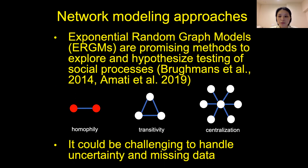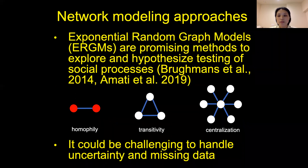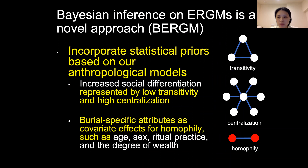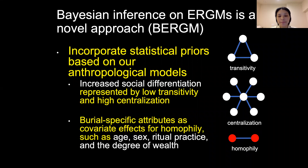ERGMs allow direct modeling for the formation of edges between nodes; however, there are some limitations — for example, ERGMs cannot handle uncertainty very well and cannot handle missing data. We attempt to resolve these issues by using a novel method based on Bayesian inference on ERGMs. Bayesian ERGMs are more intuitive for testing anthropological questions by incorporating priors into our models. If you're not familiar with Bayesian inference, you can think of priors as assumptions derived from previous experience, our data, or best guesses, which is a key part of Bayesian inference to model uncertainty.